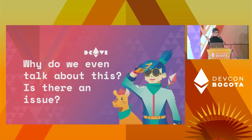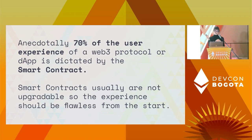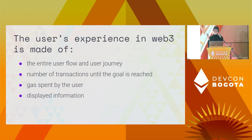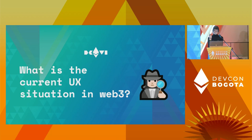So, the future of web3 UX — why do we even talk about this? Is there an issue? Anecdotally, 70% of the user experience of a web3 protocol or dApp is dictated by the smart contract. Smart contracts are usually not upgradable, so the experience should be flawless from the start. The user experience in web3 is made of the entire user flow and user journey — the number of transactions until the goal is reached, which in web2 ecommerce means the number of clicks, the gas spent by users, and the displayed information.